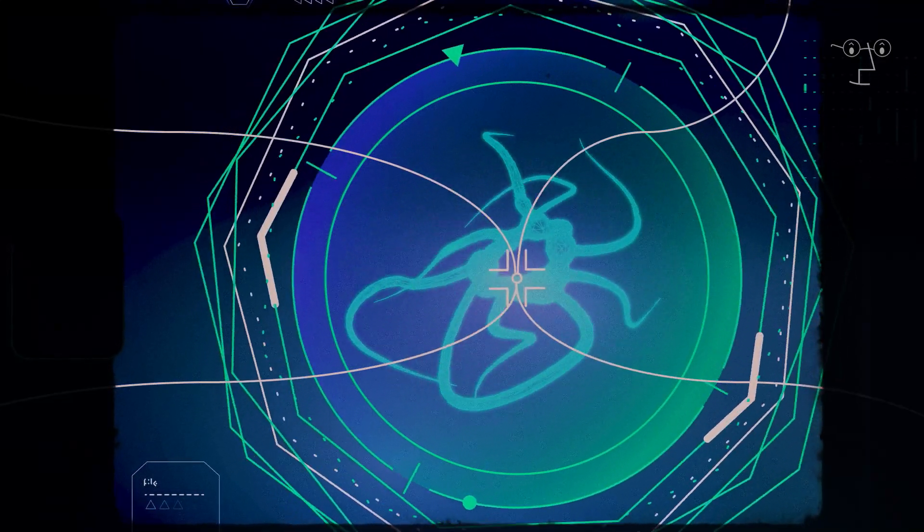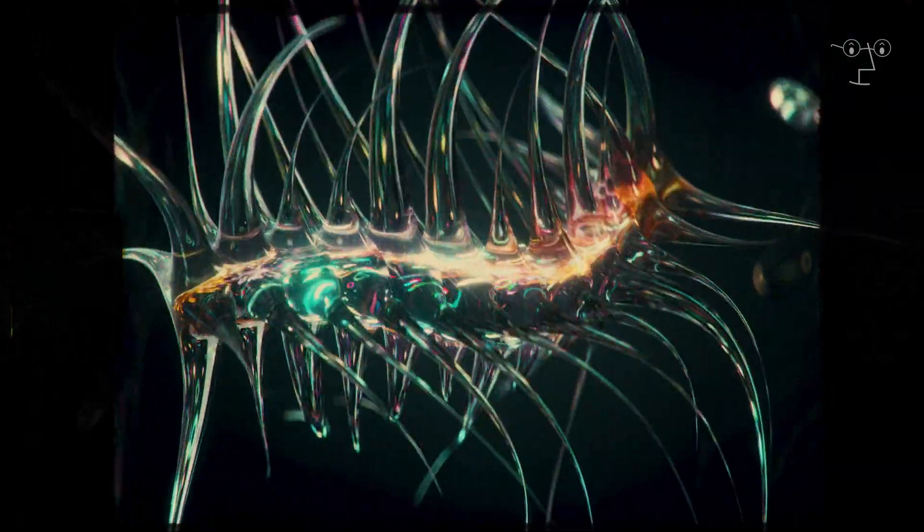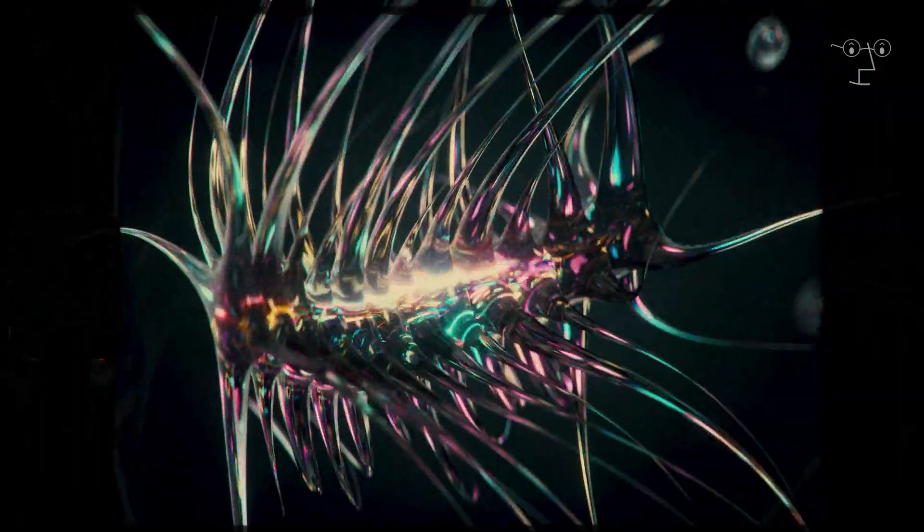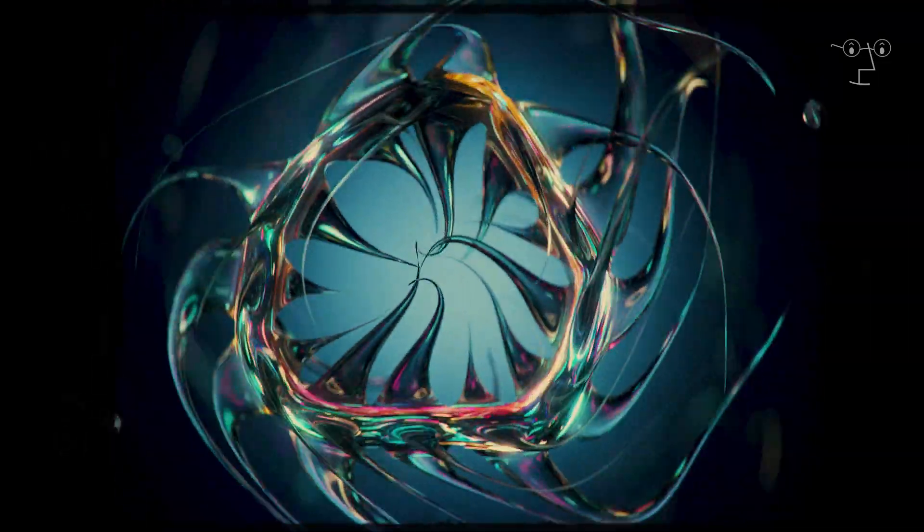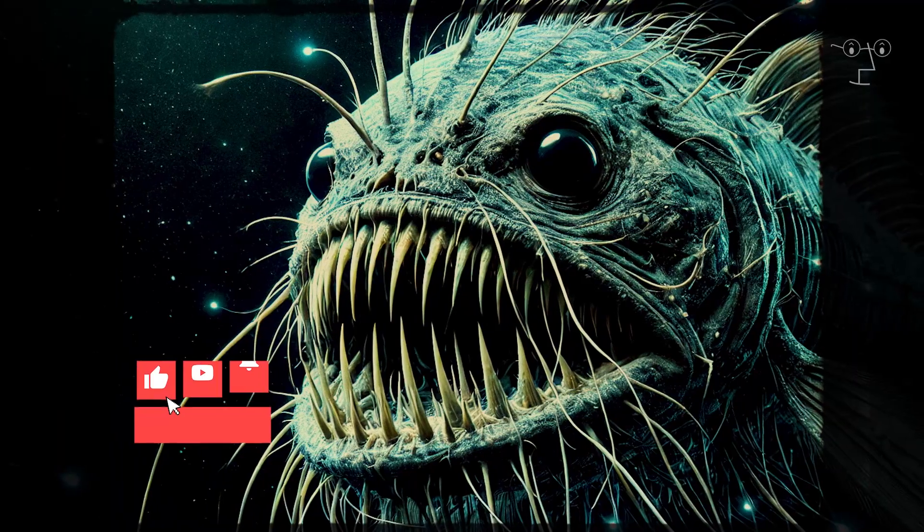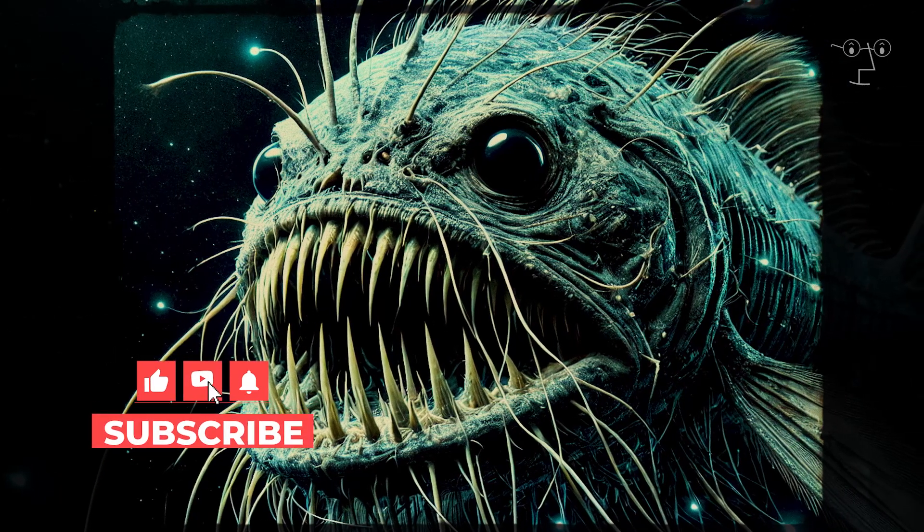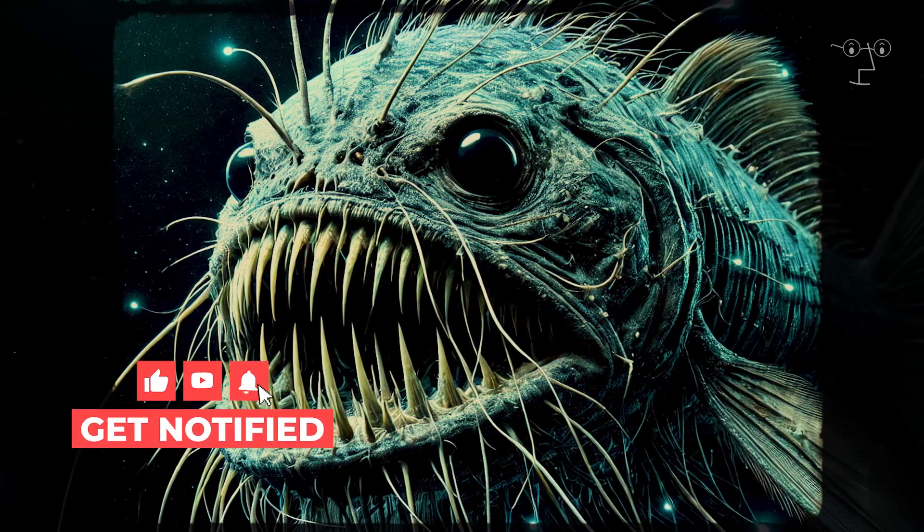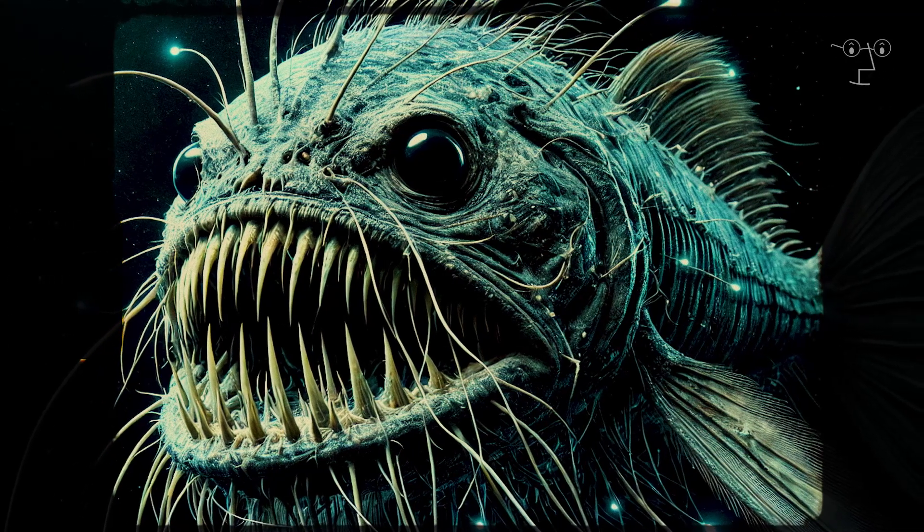The eel-like fish, for example, has an extremely flexible and almost gelatinous body, which is considered an adaptation to life under high pressure. This physical feature allows the fish to absorb and distribute pressure evenly throughout its body, avoiding the damage that extreme pressure could cause to more rigid structures. Additionally, its low muscle and bone density minimizes the need for energy expenditure, crucial in an environment where food is extremely scarce.